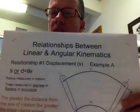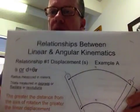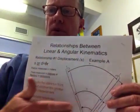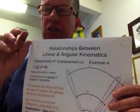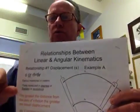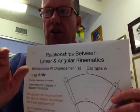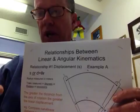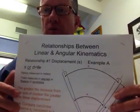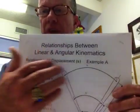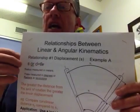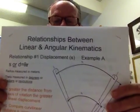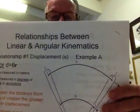We've spent our time studying linear and angular kinematics as separate entities. It's very important that in applied biomechanics — using the physics of movement, that knowledge in how we coach, train, or interpret movement — we understand the interplay between linear and angular. Here's an example, and this has to do with displacement.